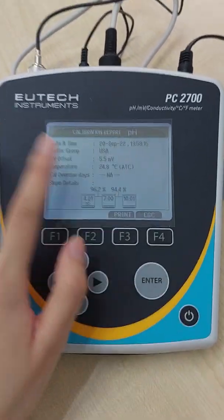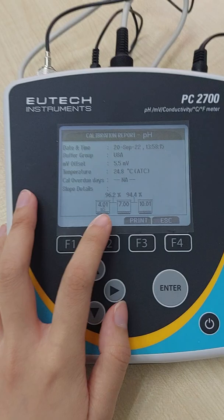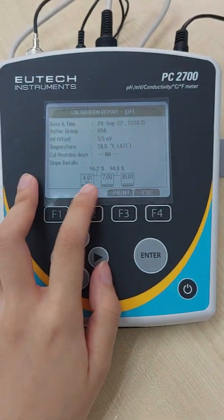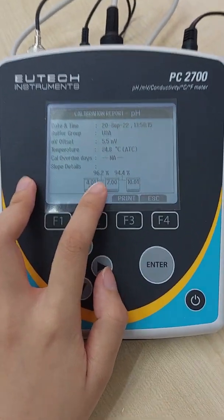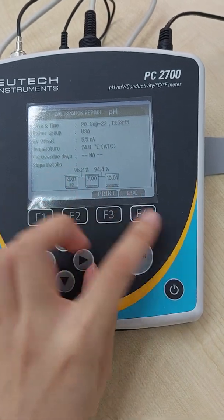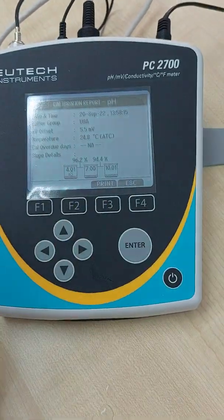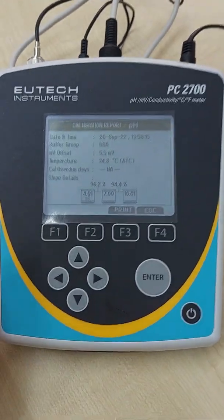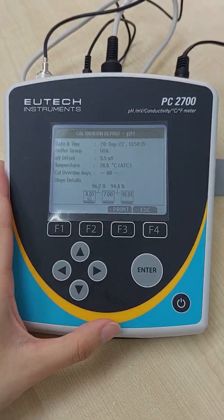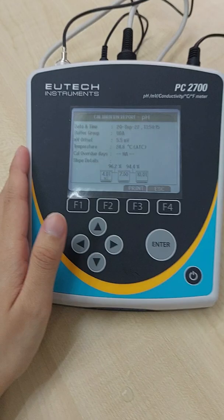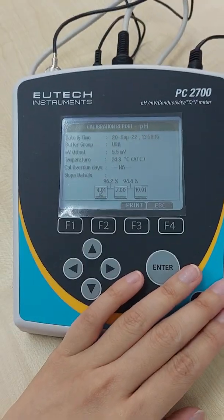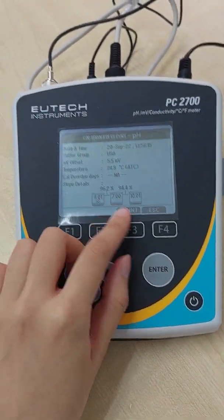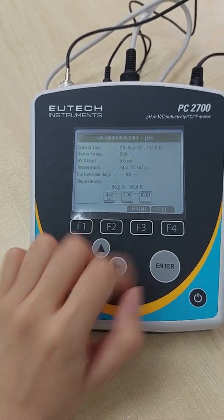Report. This will be your last calibration report. Make sure every day your calibration, the range has to be between 92% to 102%. If it's out of range, you can change a new buffer solution and then redo the calibration. If it's still out of range, that means that the probe performance is not that good. So a good one will be between 92% to 102%.